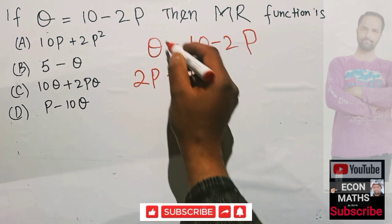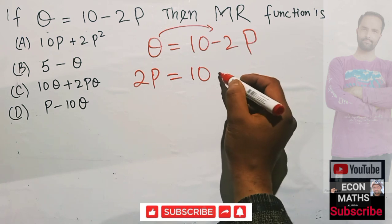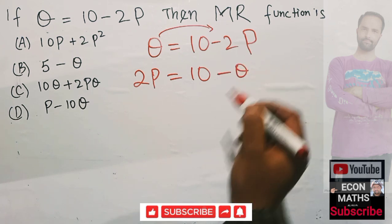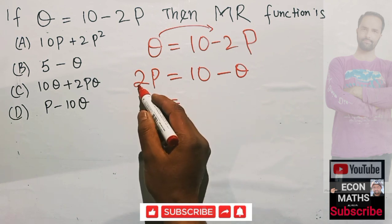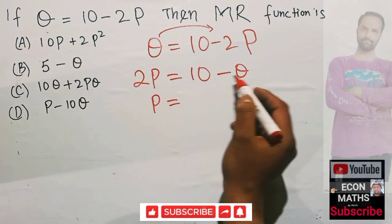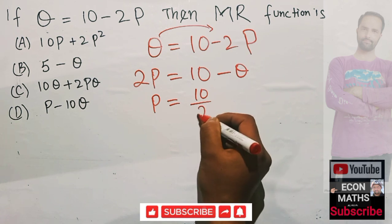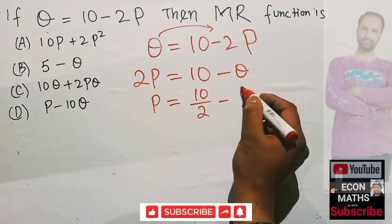10 here. Now transpose this to the right-hand side; this becomes minus Q. That means P equals - I just transpose this term, it will get divided to each of these terms - so we have 10 upon 2 minus Q